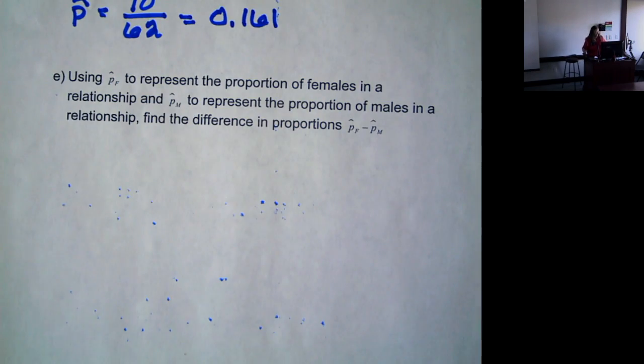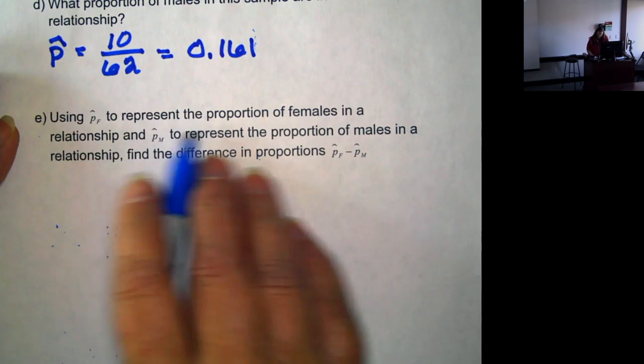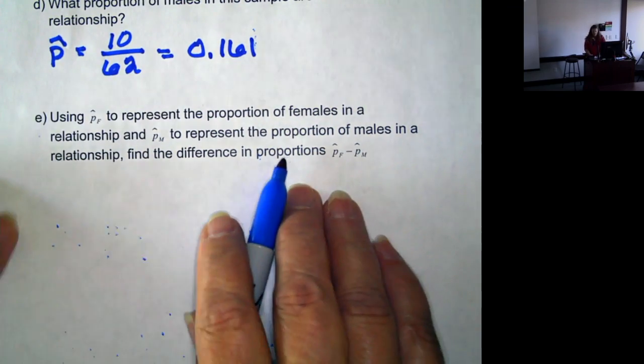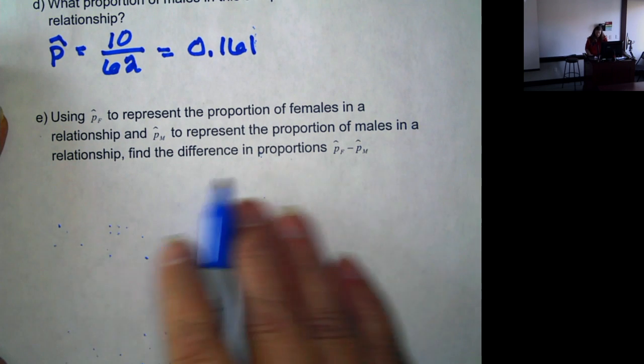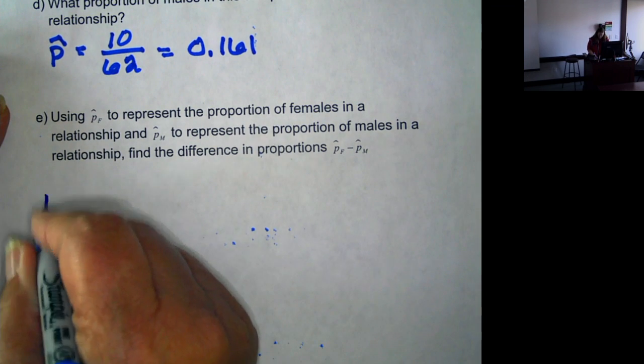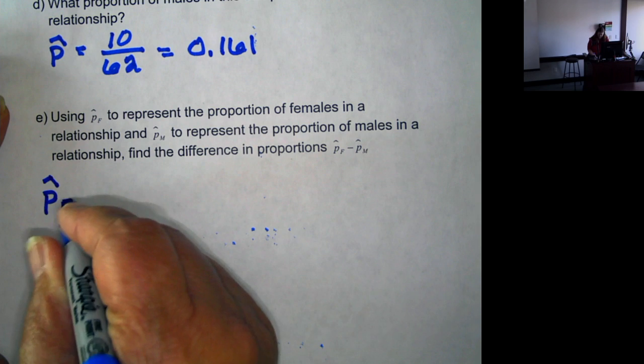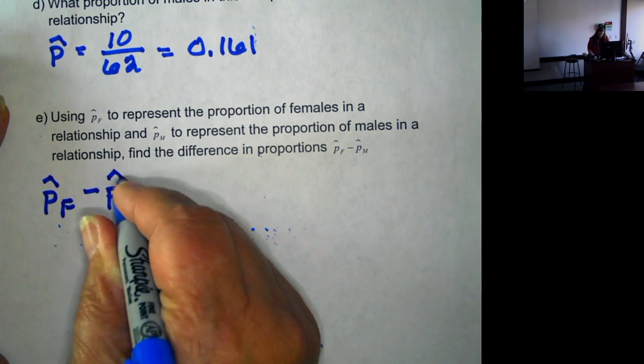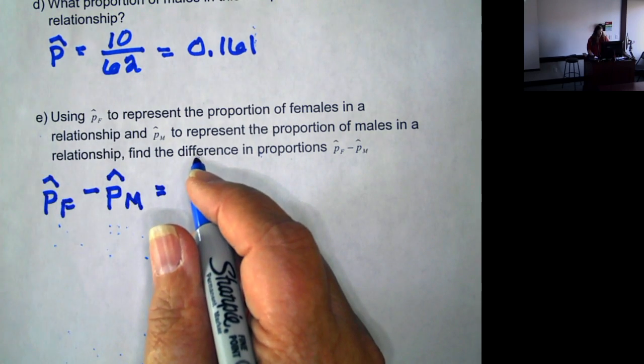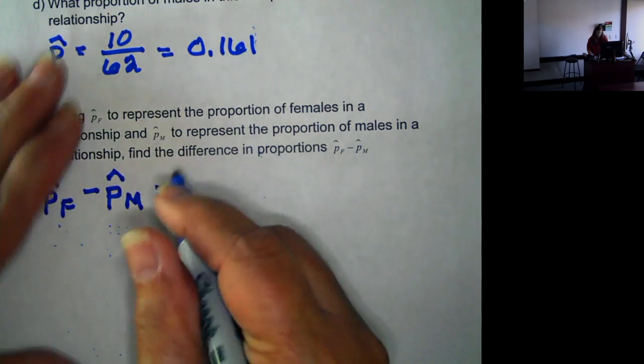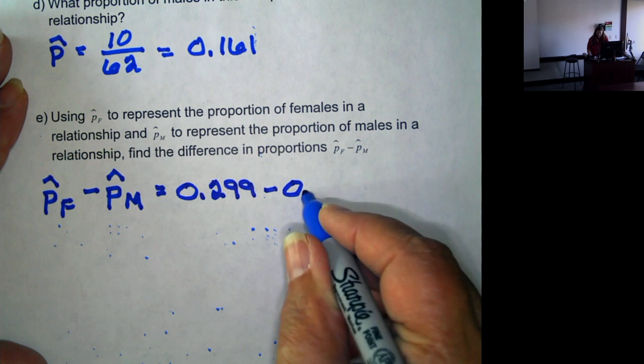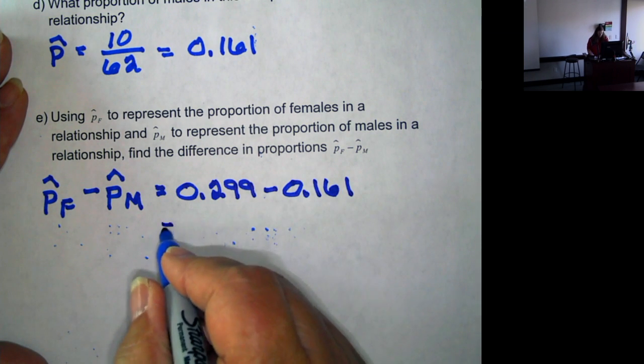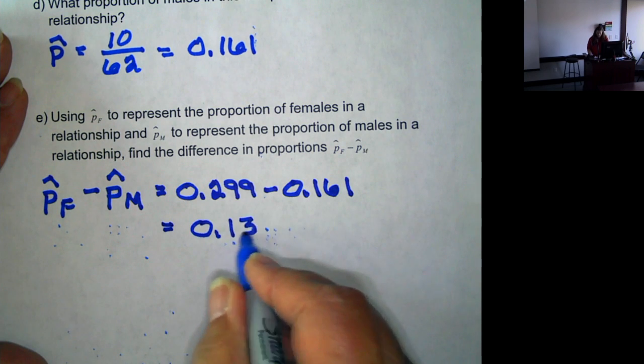Now we can take this a step further, and we're going to use p hat sub f to represent the proportion of females in a relationship, p hat sub m to represent the proportion of males in a relationship. So we want to find the difference. So p hat sub f minus p hat sub m. So the proportion of females we had in a relationship was 0.299. The proportion of males is 0.161, and the difference is 0.138.